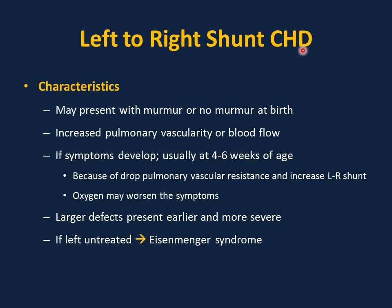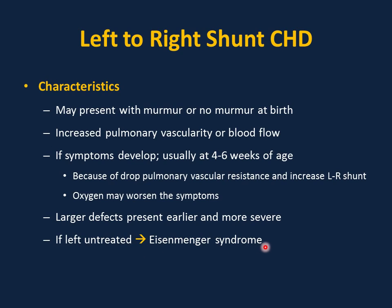Characteristics of left-to-right shunt congenital heart defects: may present with murmur or no murmur at birth; increased pulmonary vascularity on chest x-ray; if symptoms develop, usually at 4 to 6 weeks of age due to decrease in pulmonary vascular resistance. If you give oxygen to an infant with congestive heart failure and the oxygen worsens symptoms, suspect left-to-right shunt — because oxygen decreases pulmonary vascular resistance further, increasing the shunt. Larger defects present earlier and more severely. If left untreated, this causes Eisenmenger syndrome, which develops early in AV canal and takes years in atrial septal defect.